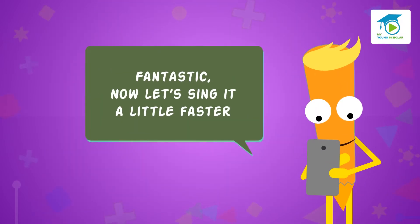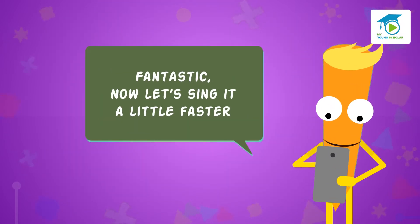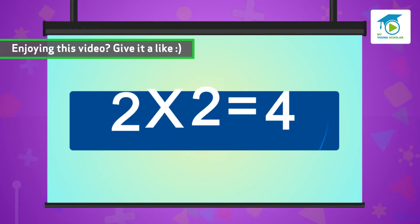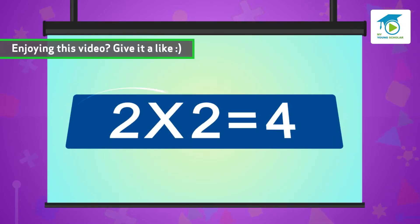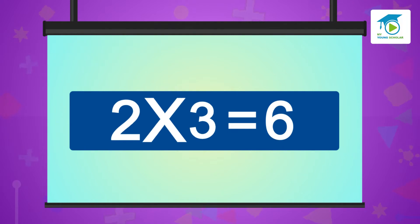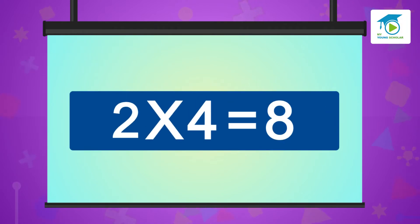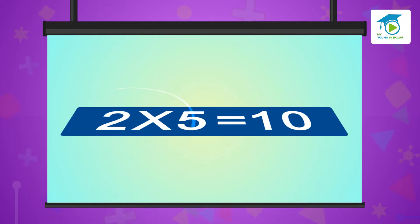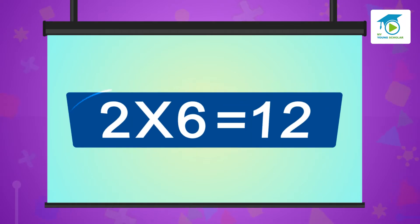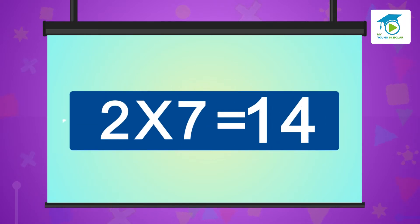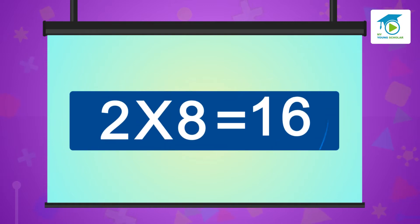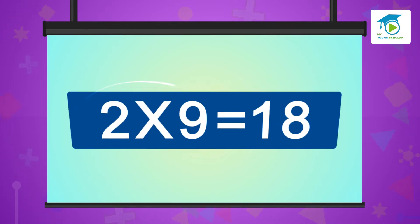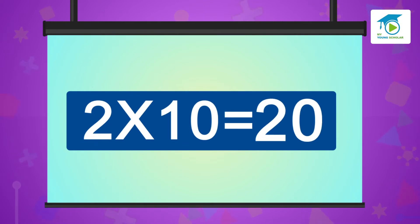Fantastic! Now let's sing a little faster. Two ones are two, two twos are four, two threes are six, two fours are eight, two fives are ten, two sixes are twelve, two sevens are fourteen, two eights are sixteen, two nines are eighteen, and two tens are twenty.